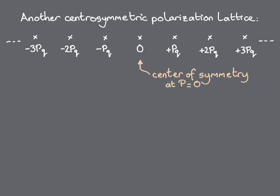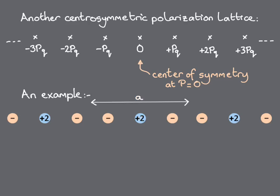So that it contains plus and minus Pq, plus and minus 2Pq, and so on. This time, the inversion center of the lattice is at P = 0, rather than halfway between plus and minus a half Pq. Here's an example of a one-dimensional crystal lattice that has such a polarization lattice. It consists of divalent cations separated by two monovalent anions.